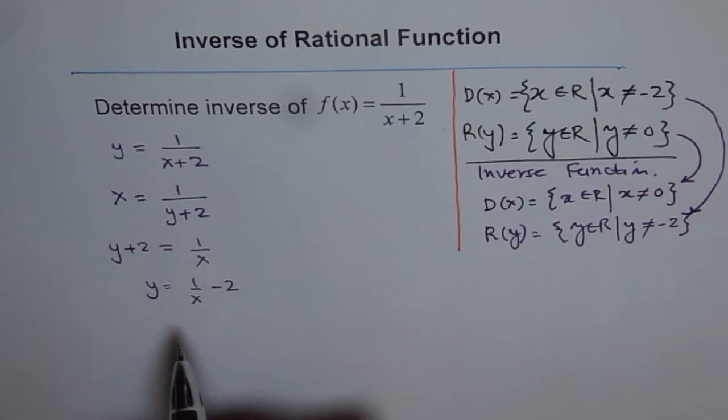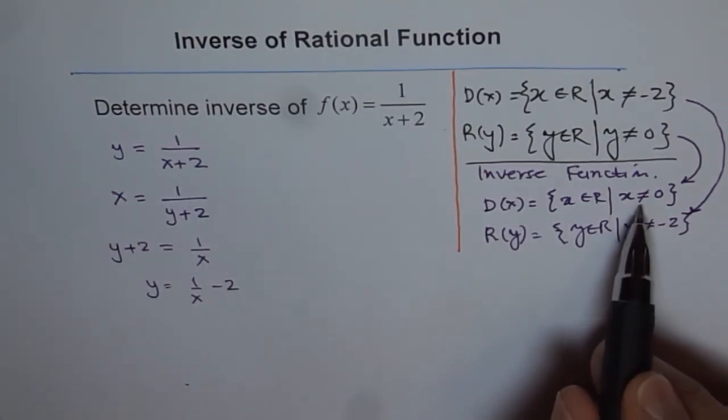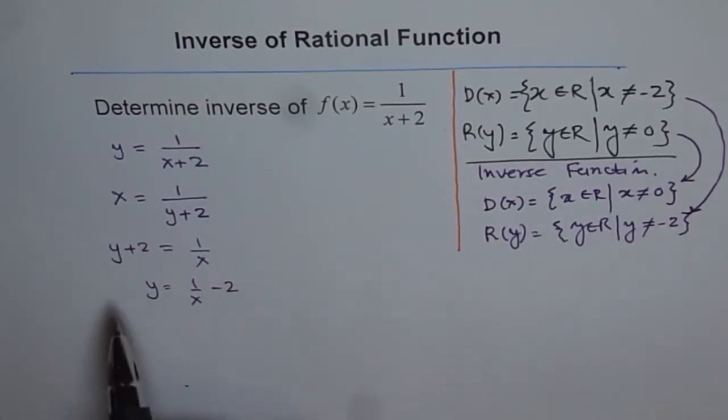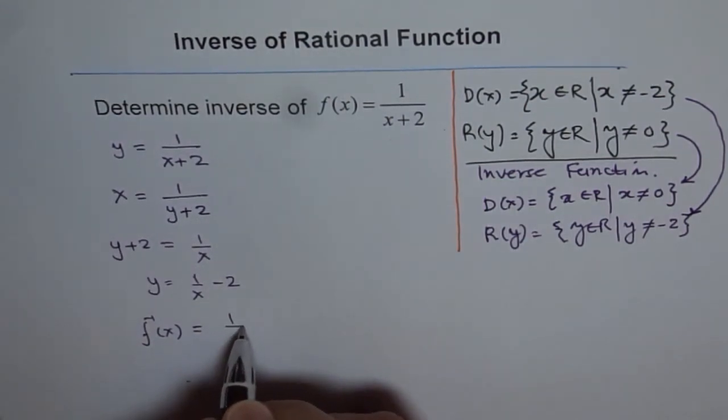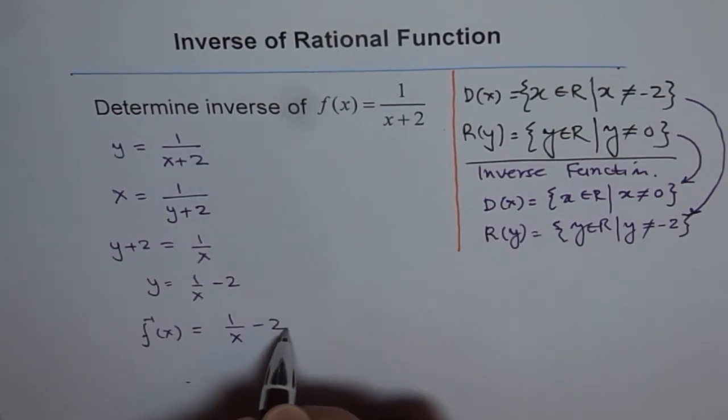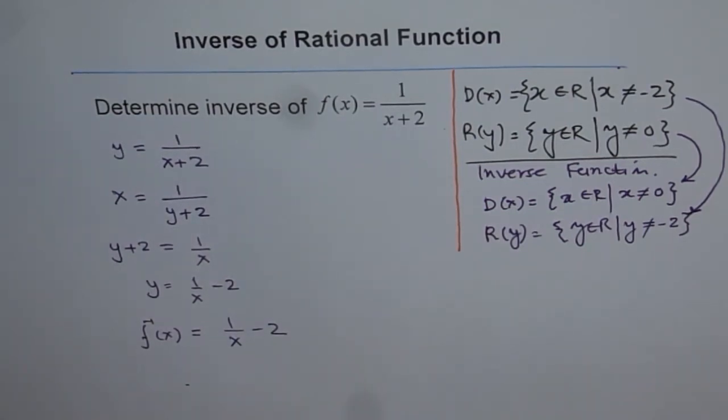As you can see now, the domain is that x is not equal to 0, and the range is that y is not equal to minus 2. Do you see that? So you can check your answer, and now you can write f inverse of x equals 1 over x minus 2. So that is what the inverse of this reciprocal function is.